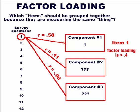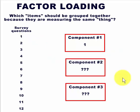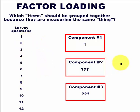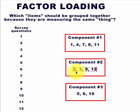They're not always this obvious — not every item will load neatly like question number one did. The software is going to determine under which of the new components each survey question should go, because it has the highest correlation or the highest loading factor. So let's pretend the computer did them all, and component one has these questions, two has these questions, three has these questions.